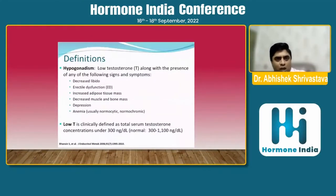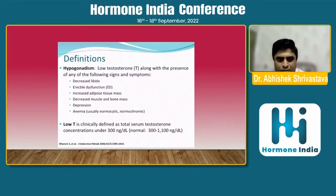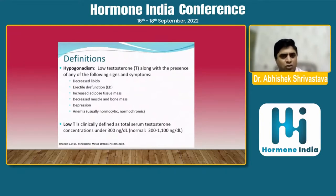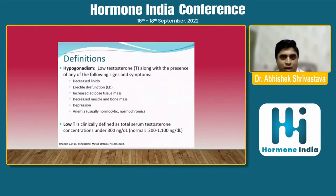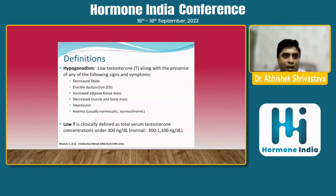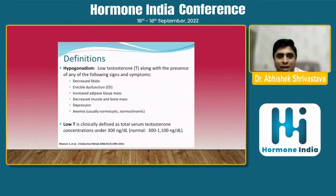To define hypogonadism initially: low testosterone levels along with the presence of any of the following signs and symptoms. We follow the widely accepted Adam's questionnaire for diagnosing hypogonadism. Signs and symptoms include decreased libido, erectile dysfunction, decreased muscle mass, decreased bone mass, depression, anemia — basically normocytic normochromic — and increased adipose tissue mass. Low testosterone is clinically defined as total serum testosterone concentration under 300 nanograms per deciliter.